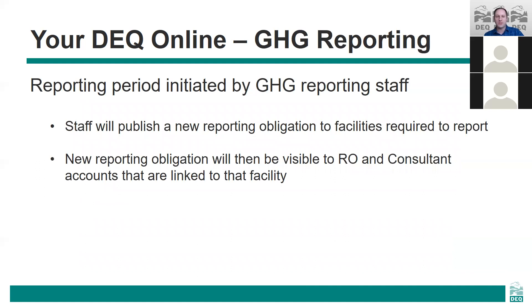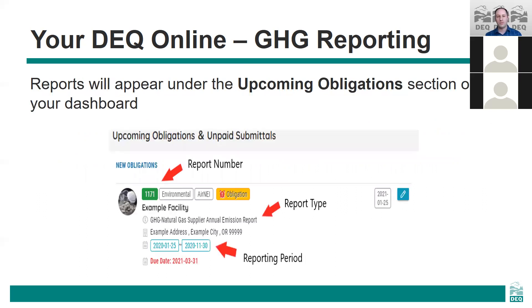You'll be able to begin your reporting once it appears under the upcoming obligations section on your dashboard, which will occur when DEQ publishes the reporting obligation for the year. We'll be trying to do this as near to the beginning of the year as we can. The reporting for this year will be made available tomorrow. When the reporting obligation is created it will appear in the upcoming obligations section, and the first RO account linked to your facility will also receive an email notification. Each report will show a unique report number, facility details, reporting type, reporting period, and due date. To begin the report, click the blue pencil icon shown on the right side.